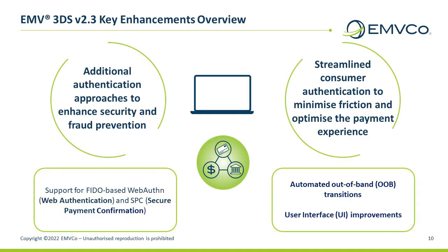Version 2.3 introduced additional authentication approaches to enhance security and fraud prevention. It also provides streamlined consumer authentication to minimize friction and optimize the payment experience. Updates include support for web authentication and secure payment confirmation that issuers and merchants can use within the EMVCo 3DS flow to better determine the legitimacy of a transaction in order to reduce the risk of fraud. Also included are automated out-of-band transactions for a more seamless user experience, and user interface improvements to simplify how information is communicated to consumers.